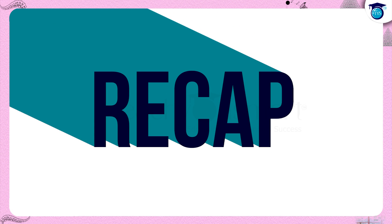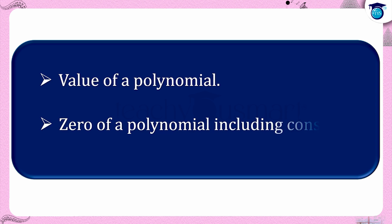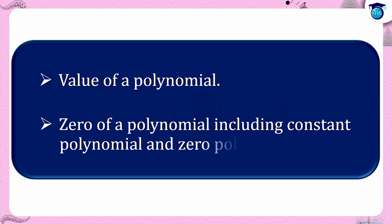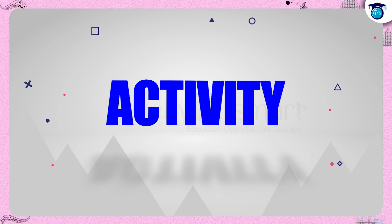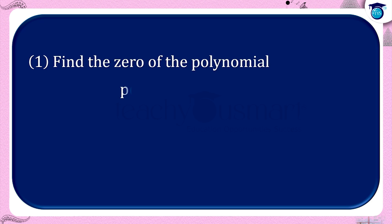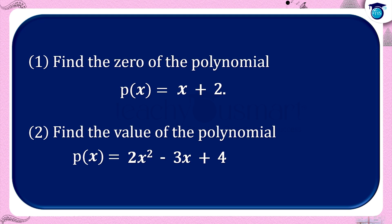Let's have a quick recap. Today we have seen the value of a polynomial and the zero of a polynomial, including constant polynomial and zero polynomial. Before winding up, let's check how much you understood by doing an activity. First, find the zero of the polynomial p(x) = x + 2. Second, find the value of the polynomial p(x) = 2x² minus 3x plus 4 when x equals 2.